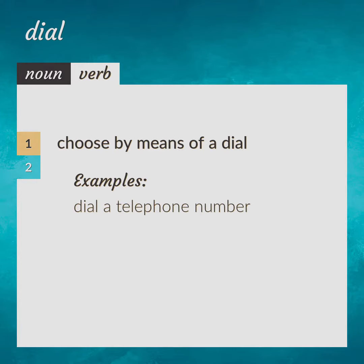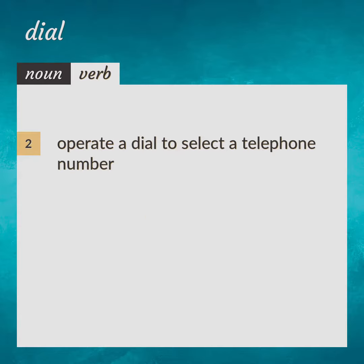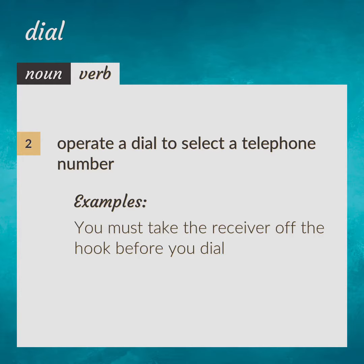Dial a telephone number. Operate a dial to select a telephone number. You must take the receiver off the hook before you dial.